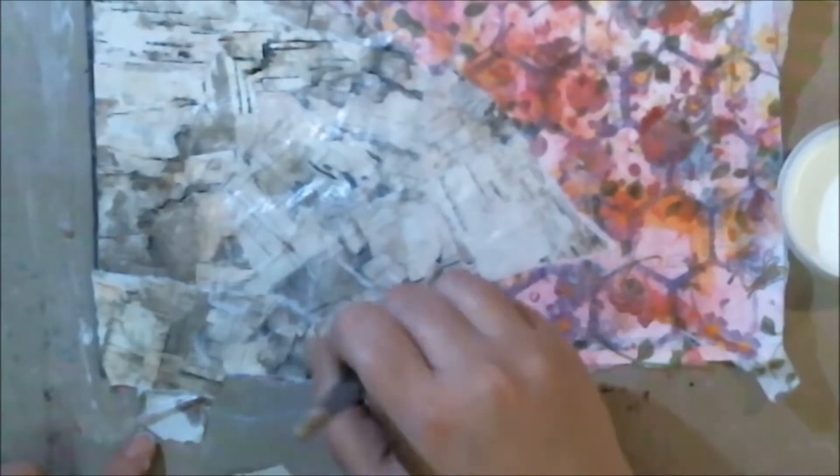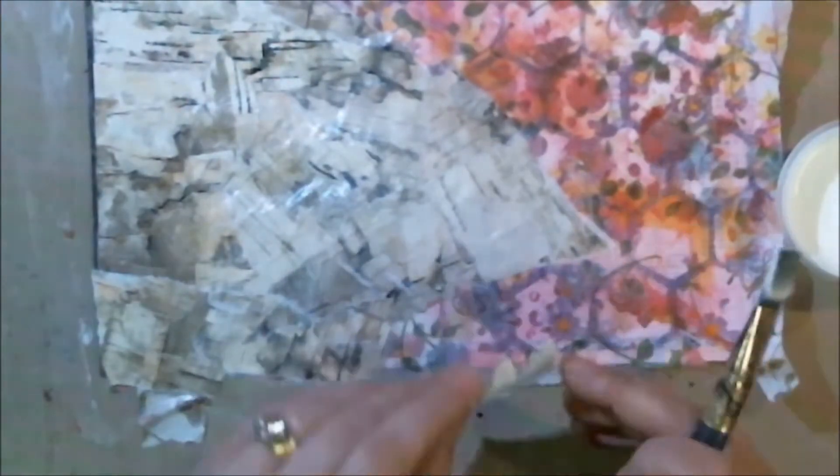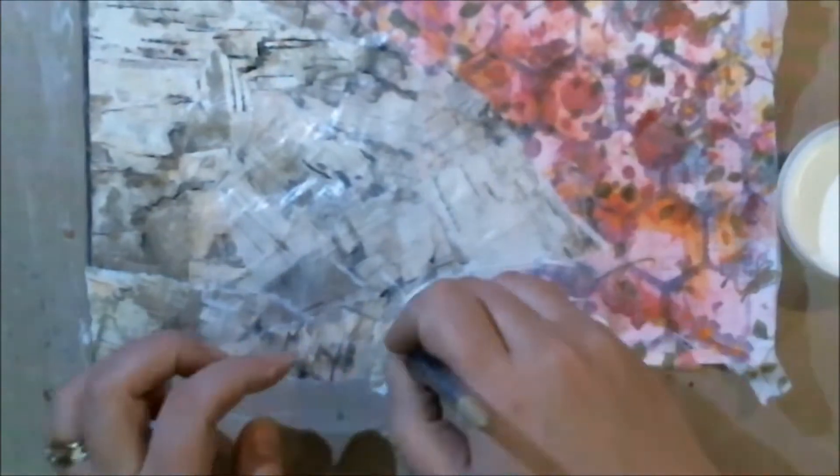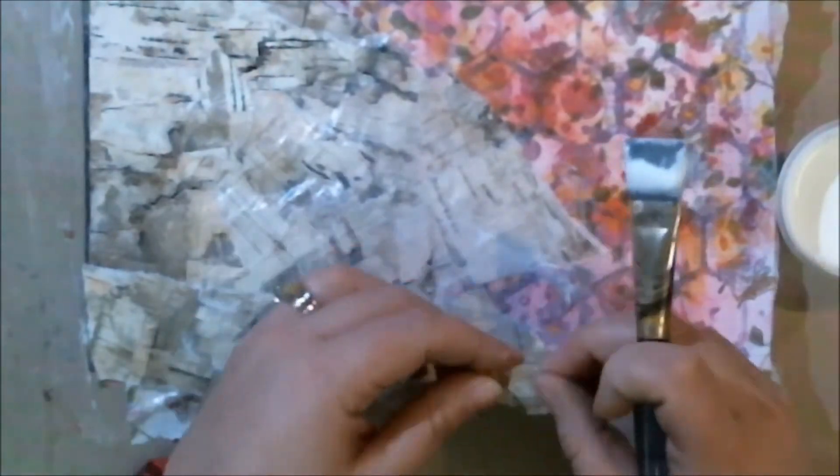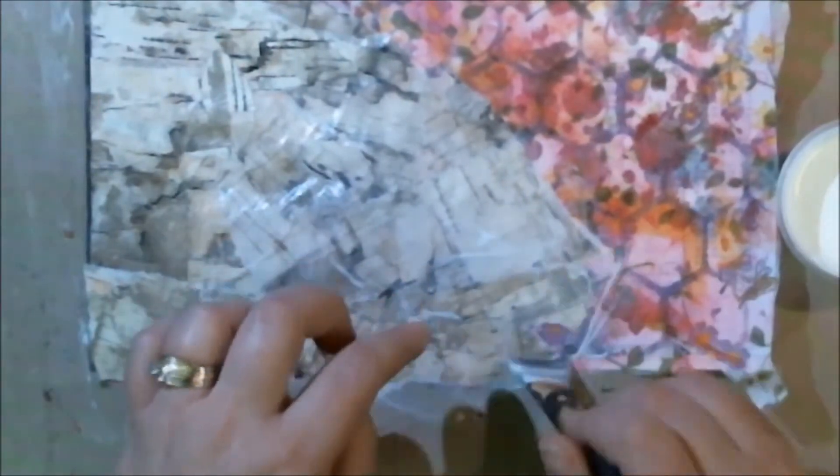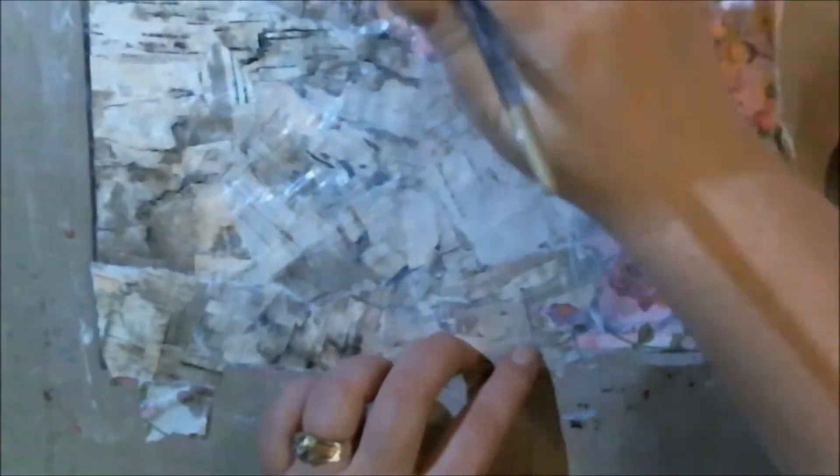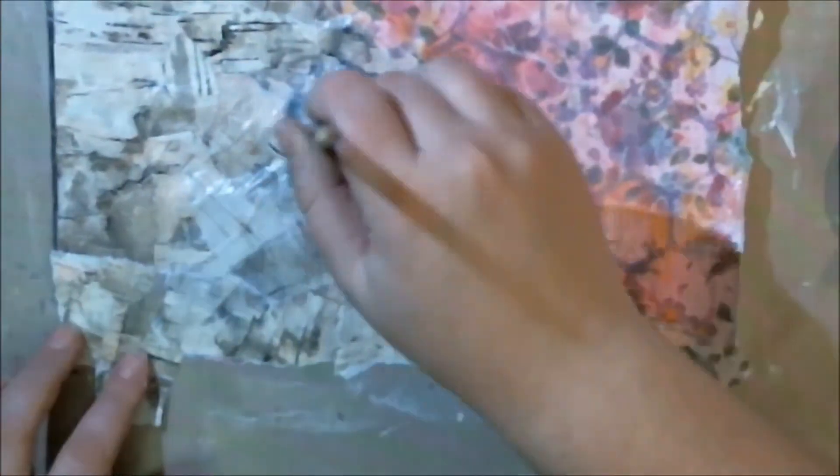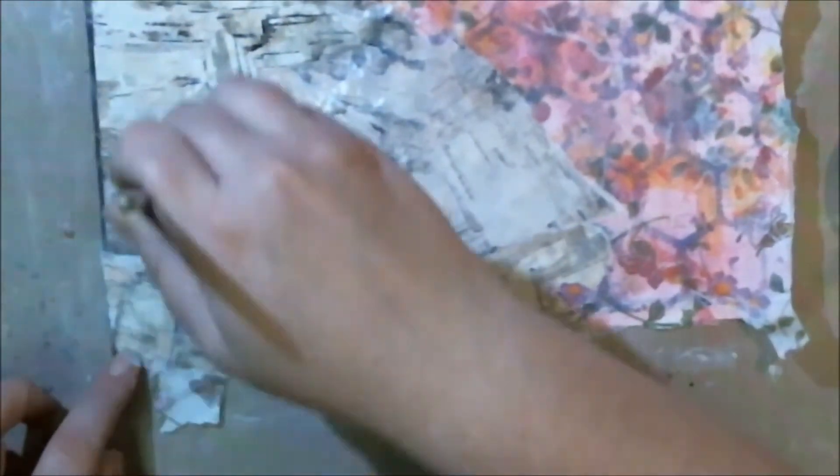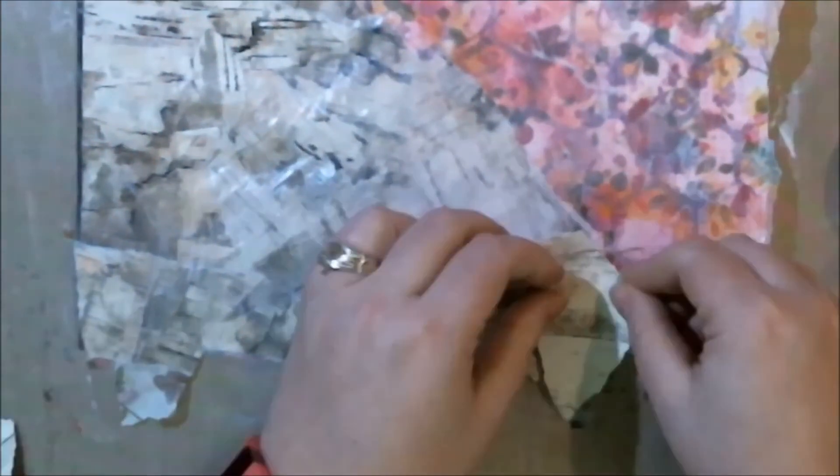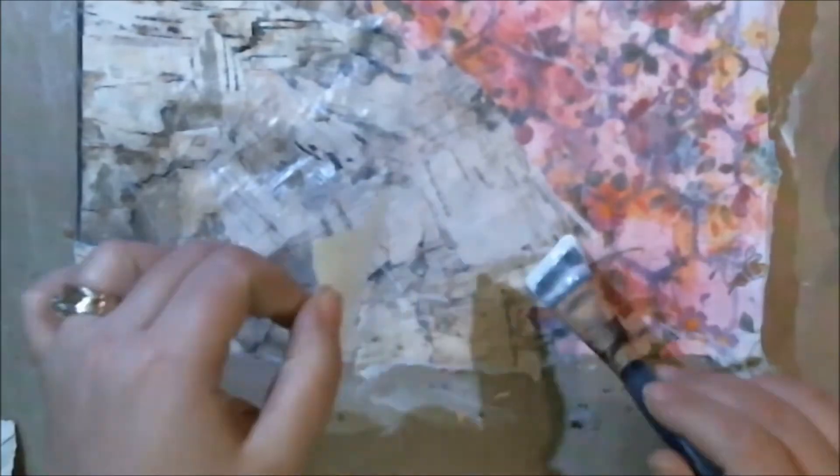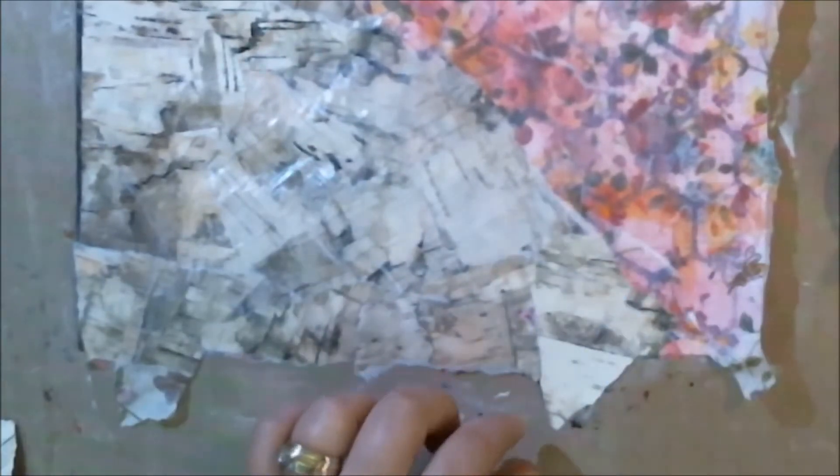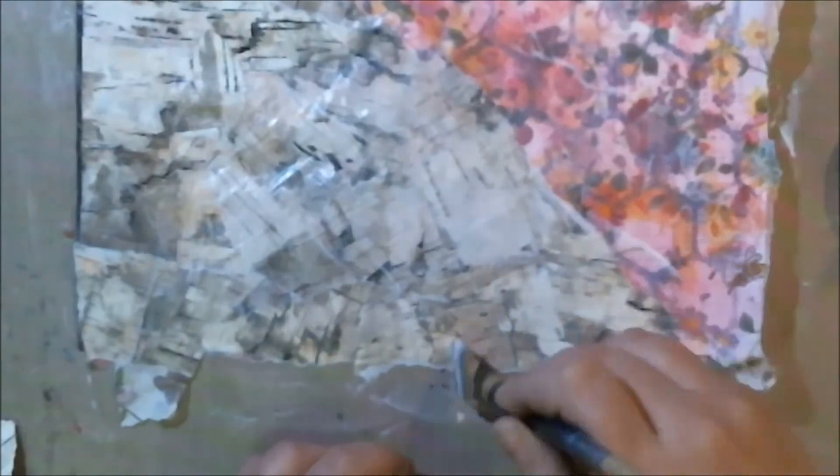Once that is all done, I make sure that I cover it with a nice thick layer of matte medium. I'm covering the rest of the page with matte medium as well because it is a watercolor crayon and I didn't want the paint to move anymore. Once that is nice and dry, I can move on to the next step.